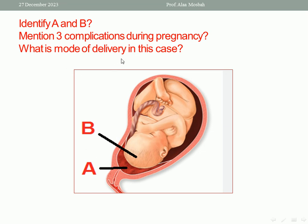What is the mode of delivery in this case? This is elective caesarean section, or emergency caesarean section if there is severe bleeding affecting the general condition of the mother or life is threatened. So, caesarean section is the mode of delivery in complete placenta previa.